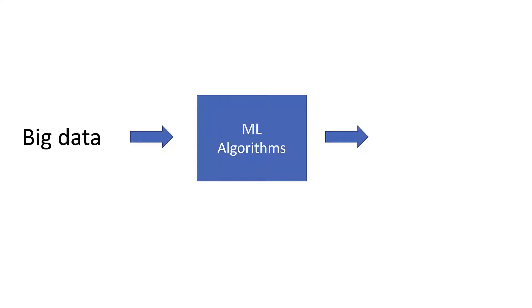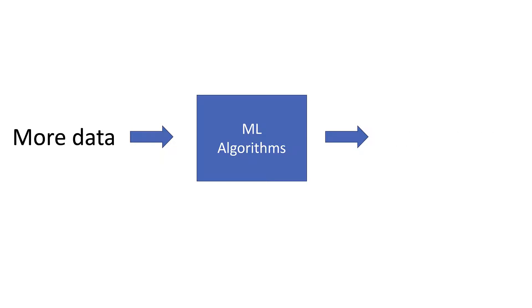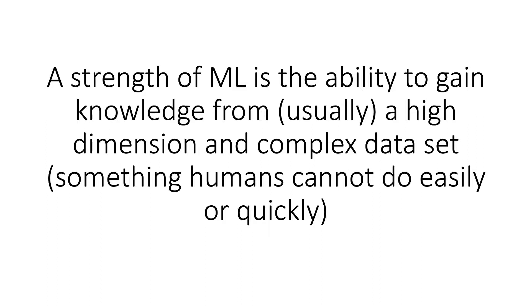Now let's look at machine learning algorithms. We have machine learning algorithms with various parameters that have not yet learned. We supply something called big data to these algorithms — essentially training cases, the same as experiences in the human mind. As we apply these training cases, which could be thousands, tens of thousands, millions, or even billions of cases, the machine learning algorithms create new knowledge based on what they've seen. The more data you feed the algorithms, the more improved or new knowledge you get. A key strength of machine learning is the ability to gain knowledge from high-dimensional and complex data sets, something humans usually can't do easily or quickly.